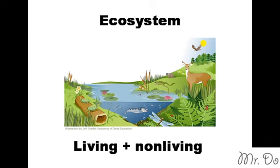And when you have the community together with non-living things like wind, water, sunlight, and stuff like that, that makes it an ecosystem. So an ecosystem includes both living and non-living things.